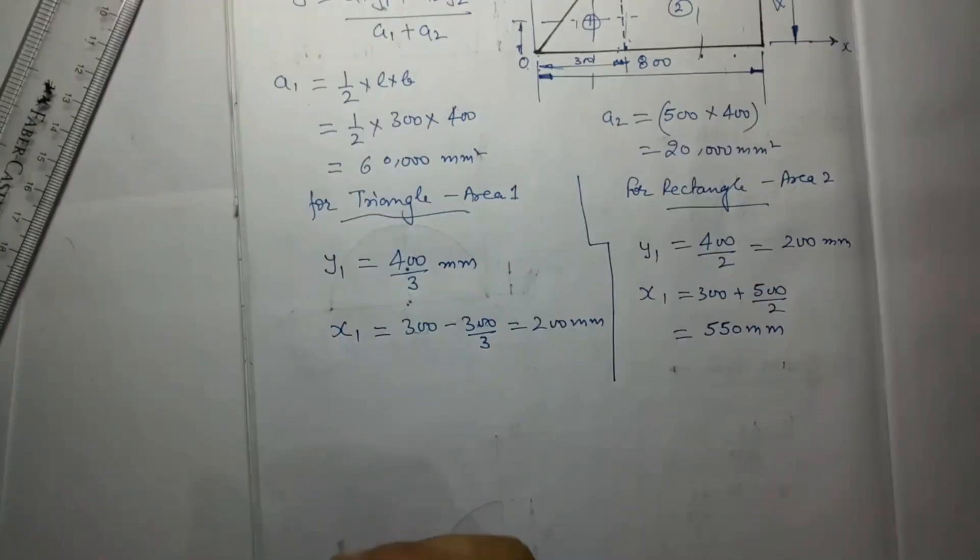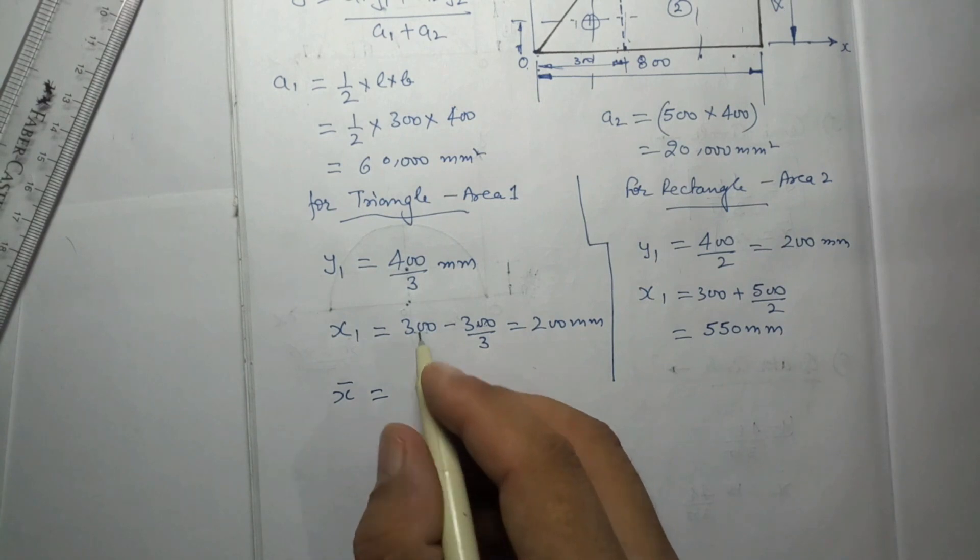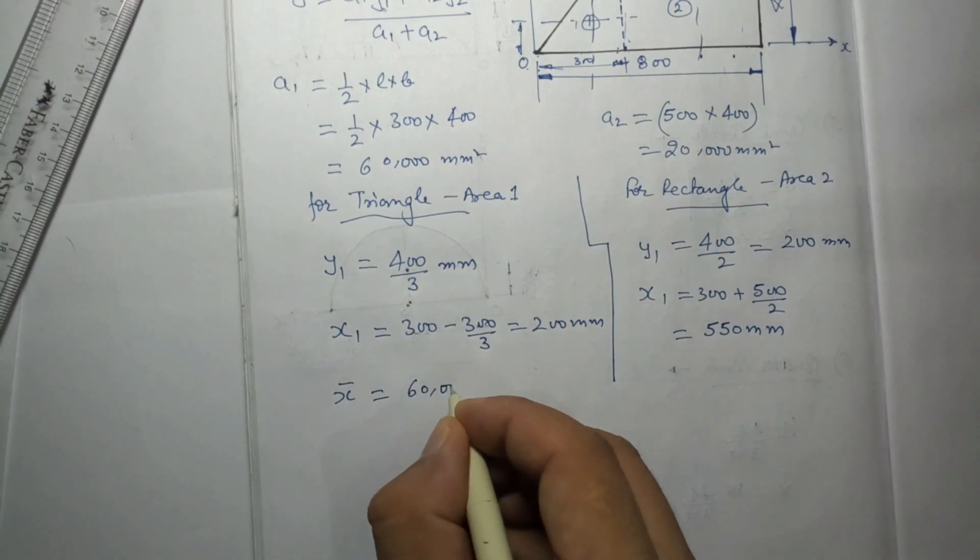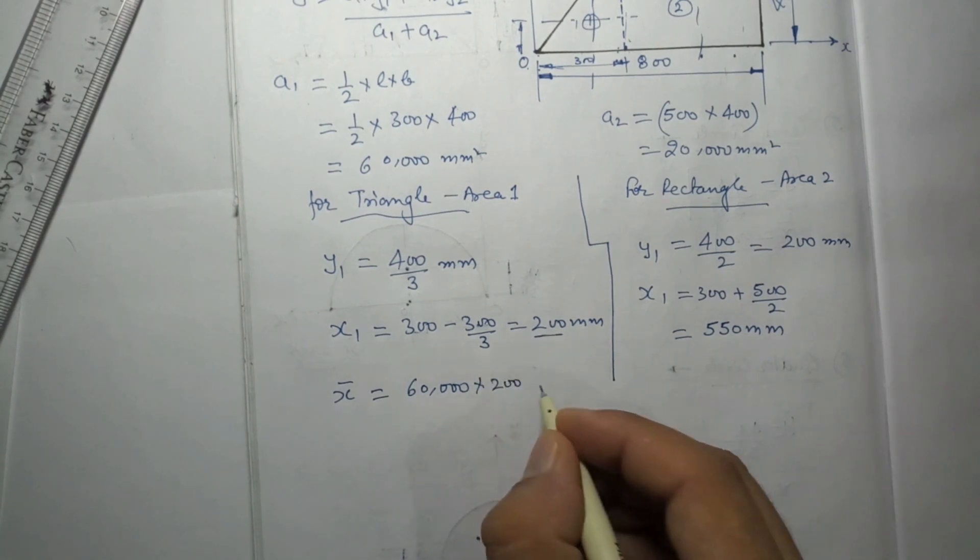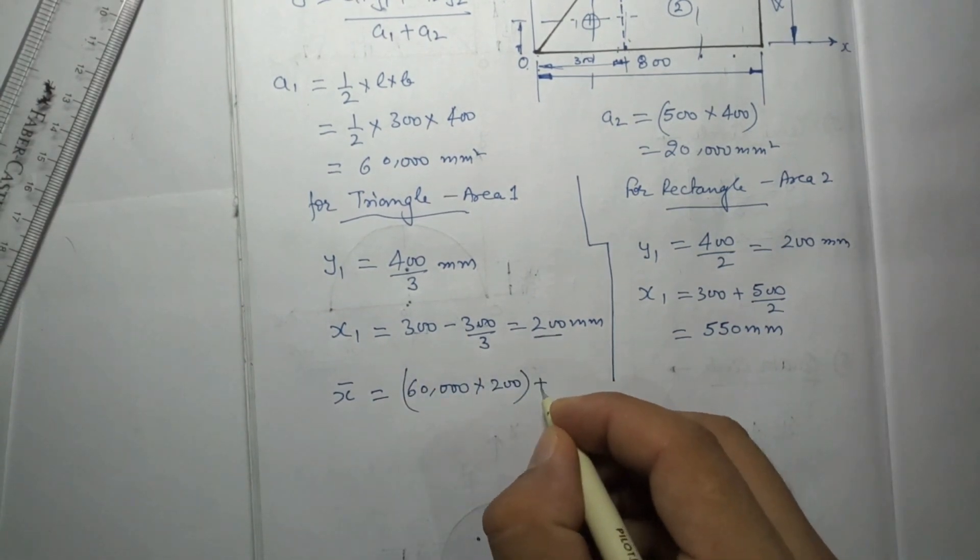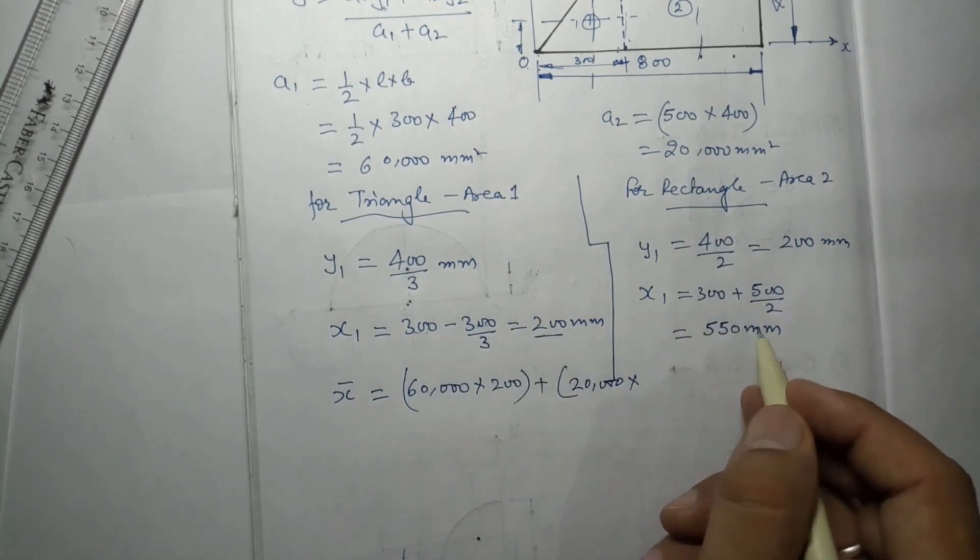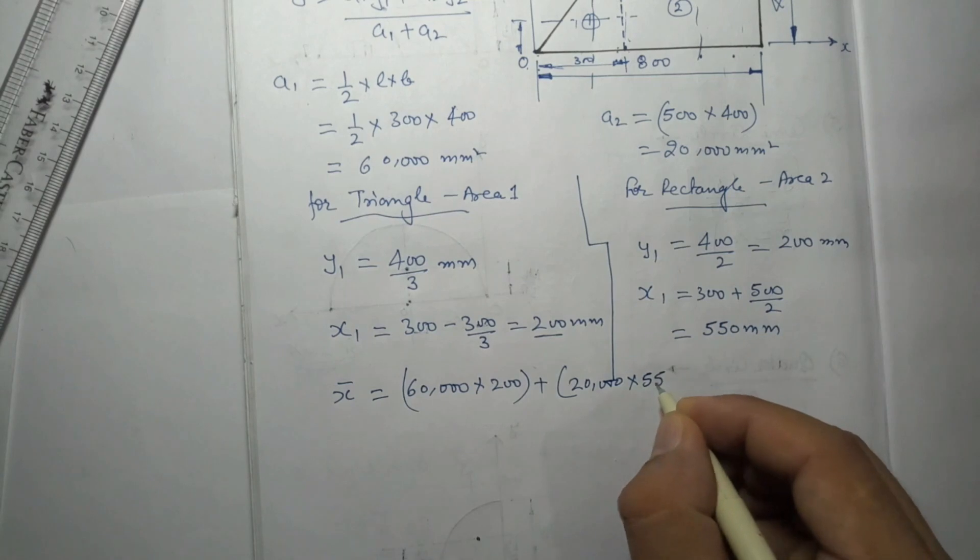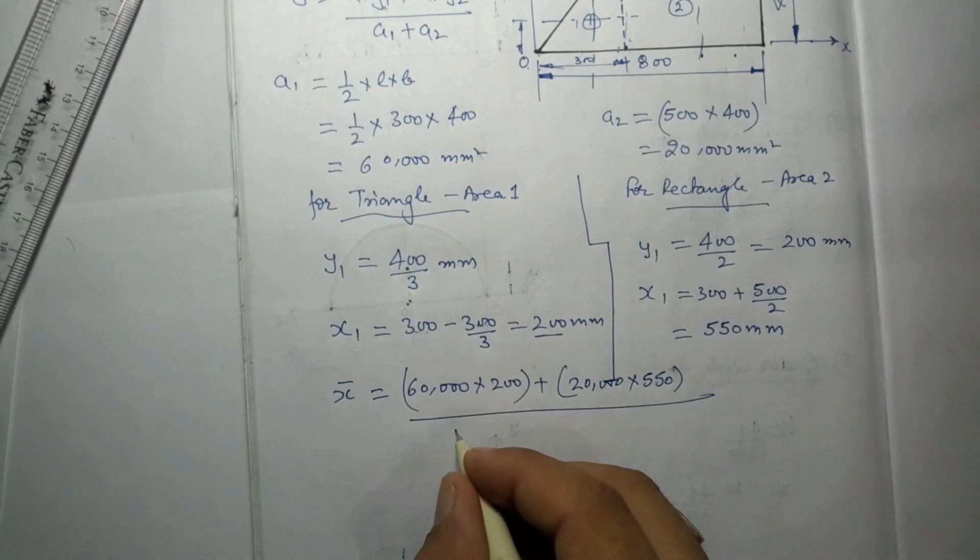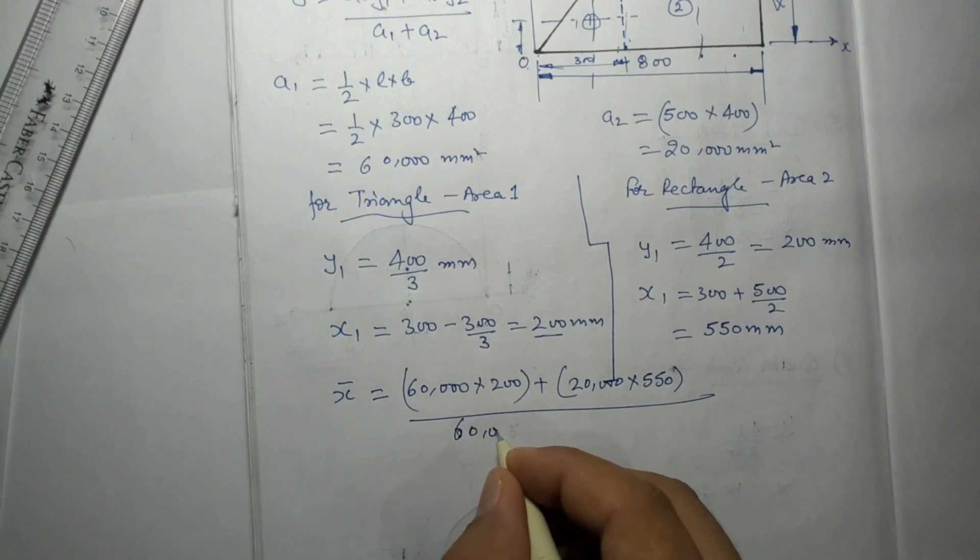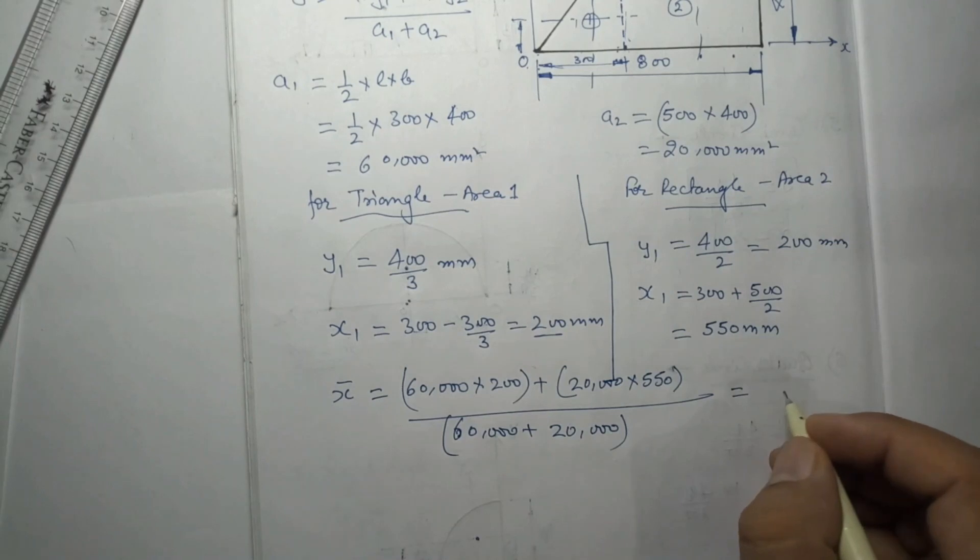Now we will fill these values in the main formula. x̄ is equal to A1·x1 + A2·x2 divided by A1 + A2. So that is 60,000 × 200 + 200,000 × 550 divided by 60,000 + 200,000. After calculation we are getting it equals to 469.23 mm.